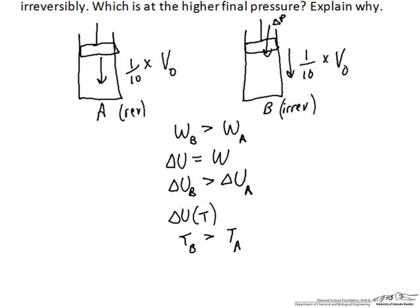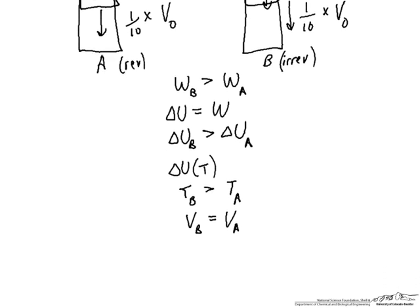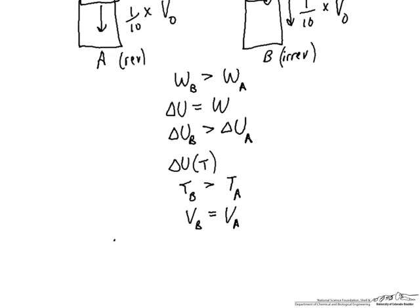T_B is greater than T_A even though the final volumes are equal. The temperature is higher in B, the volumes are the same, and therefore by the ideal gas law, P_B/P_A equals T_B/T_A. Therefore, the final pressure in tank B is also greater than the final pressure in tank A.